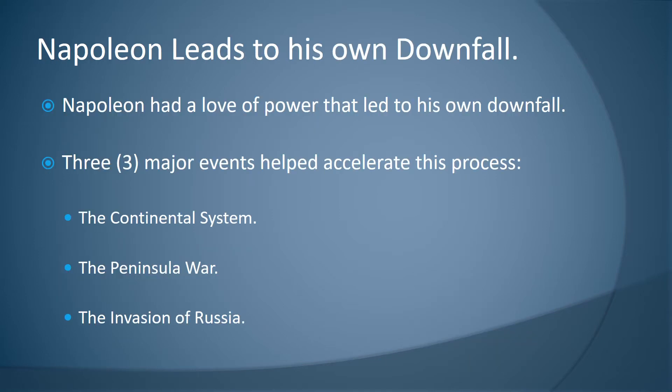Napoleon had a love of power that led to his own downfall. There are three major events that helped accelerate this process: the continental system, the peninsular war, and the invasion of Russia.